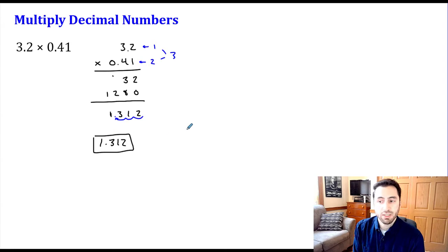So essentially, mathematically, what we're doing here is by multiplying these numbers as if they're whole numbers first. So just to show you here, so if I want to rewrite this, the way that we did it initially is I actually just thought about it as 32 times 41.